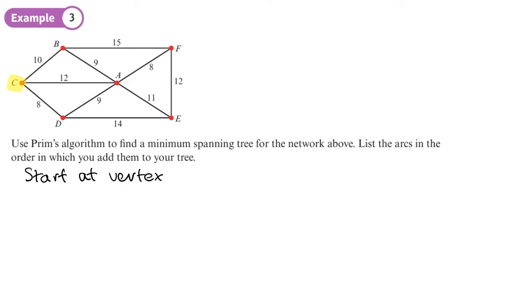vertex C. Then what I'm looking for from vertex C, just this vertex at the moment, is what's the lowest weight edge, and that's going to be this one here, CD. So this edge here is going to get added to my spanning tree. I'll just put CD with weight 8. So that's the first one I've added.